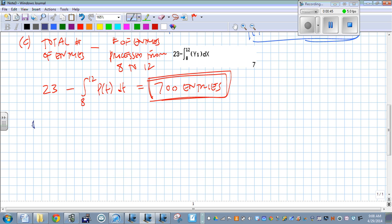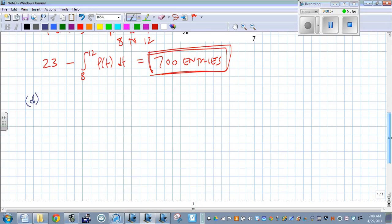So this goes back to stuff we've done in the past. First, to find the absolute max, we need to find the critical values. And then check the critical values and the endpoints. Since this is a closed interval, we can use the endpoints also.